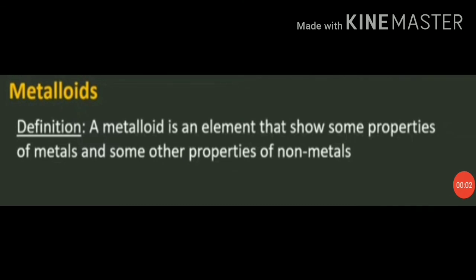Let's talk about metalloids. A metalloid is an element that shows some properties of metals and some properties of non-metals. The elements whose properties are intermediate between those of metals and non-metals are known as metalloids. For example, silicon, germanium, arsenic, etc.